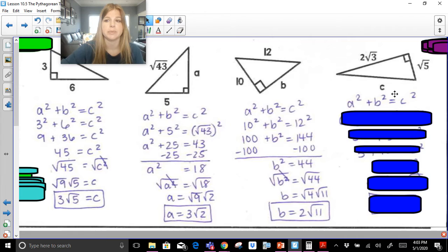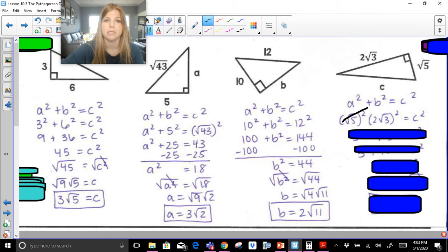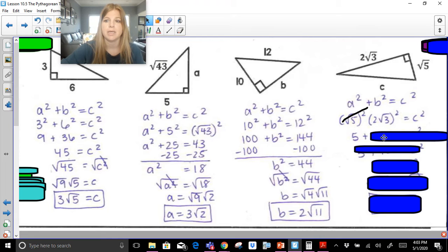Last one, we're given two legs. We have to find the hypotenuse. So radical 5 squared plus 2 radical 3 squared equals C squared. Now, radical 5 squared, we know the square root and the squared symbol cancel each other out, so we are left with 5.